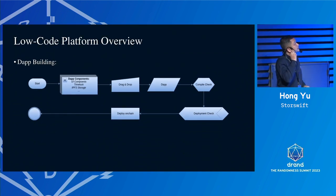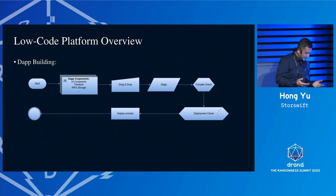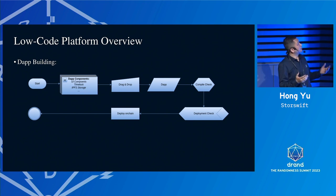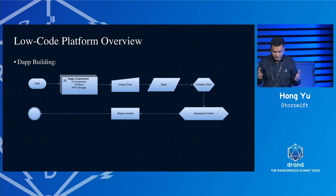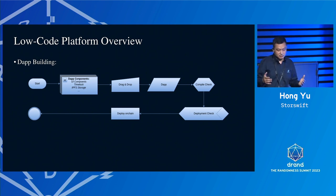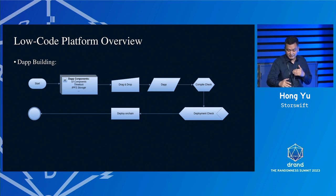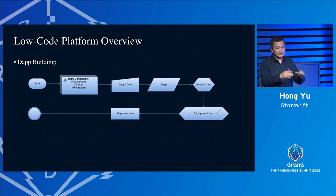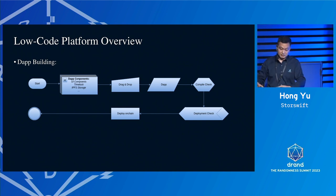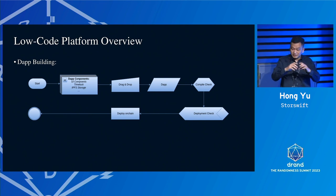The platform makes it easier — users input data, encrypt it with time lock encryption, and then wait for the time lock to be released to get the result. This is an overview of DApp building: we customize the time lock encryption component, the IPFS storage component, and also provide a layer 2 passphrase encryption component. People only need to drag and drop, preview the business process, compile, and deploy.